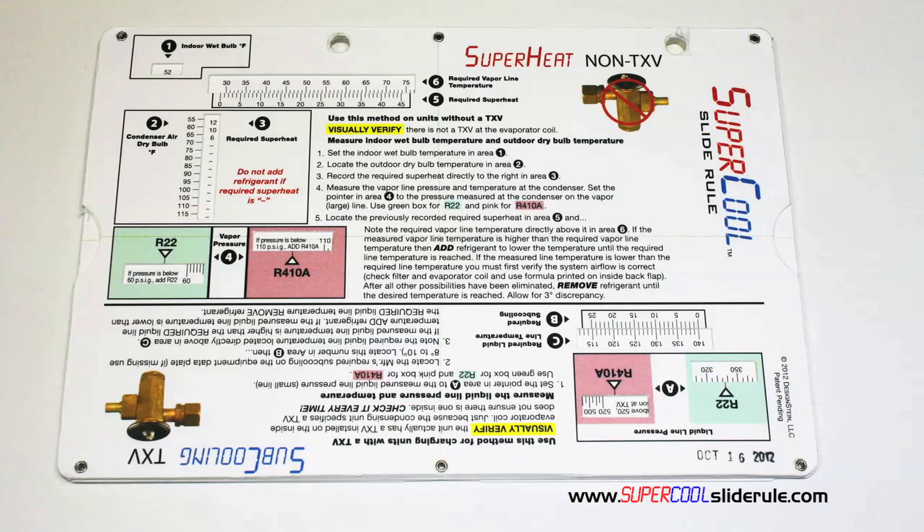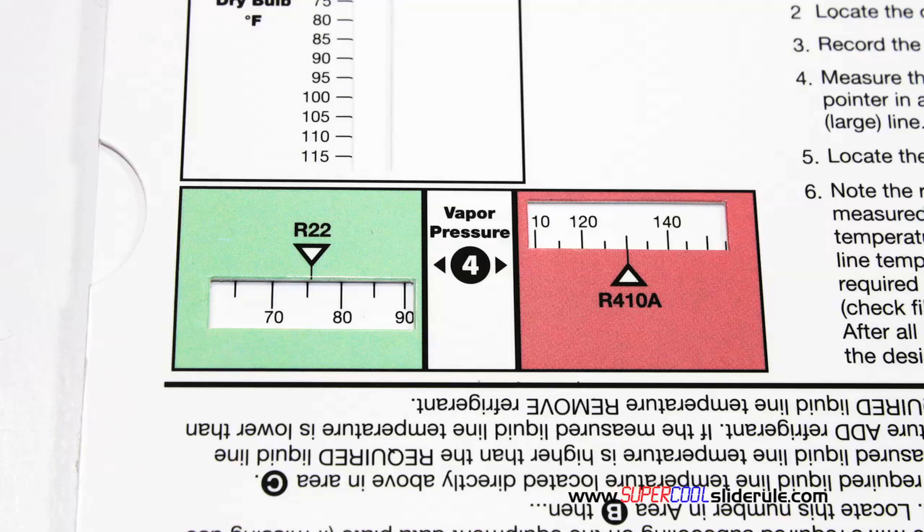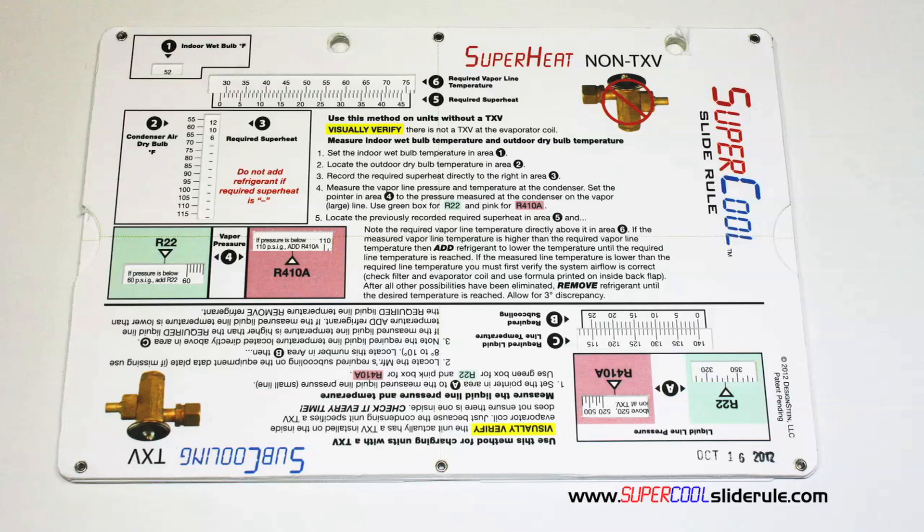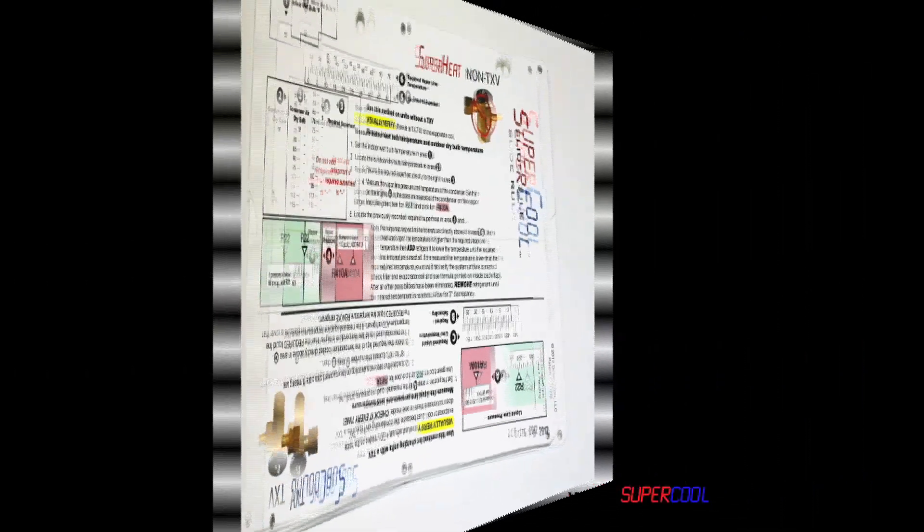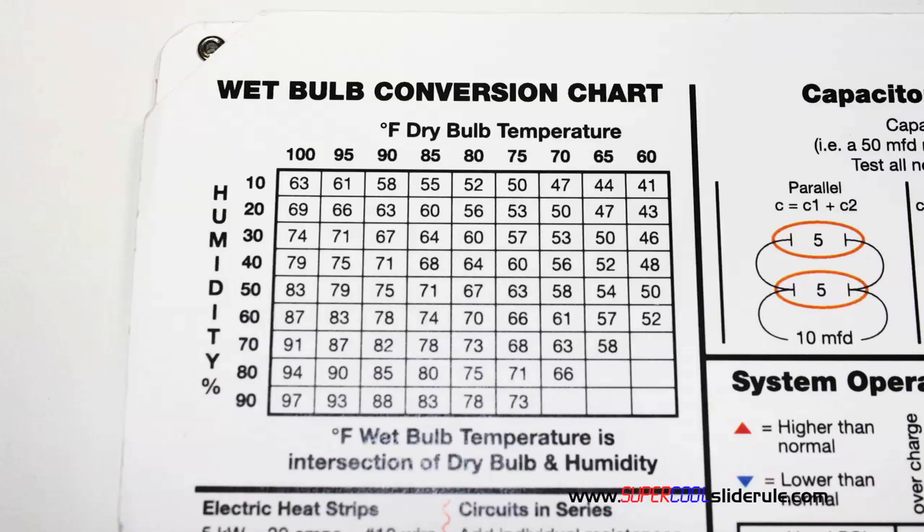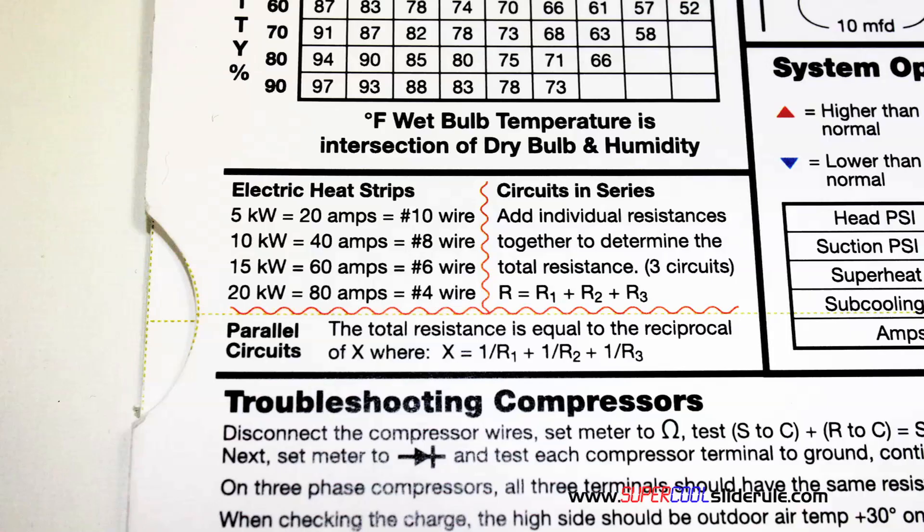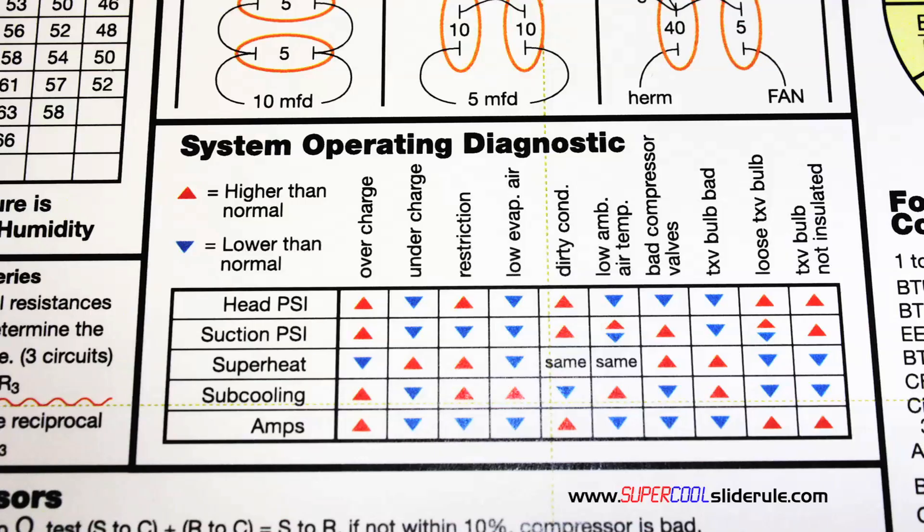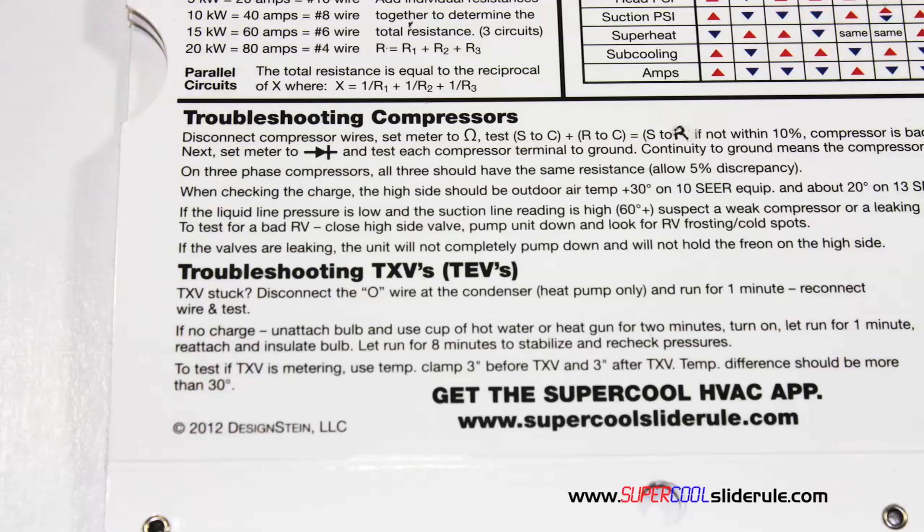This one tool will allow you to charge a system with R22 or R410A in either the superheat or subcooling method. The back cover contains required formulas, it has capacitor rules and practices, a wet bulb conversion chart, how to perform computations on series or parallel circuits, an electric heat strip guide, a complete system troubleshooting diagnostic chart, and how to troubleshoot compressors and TXVs.